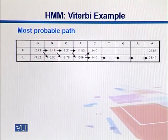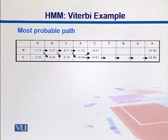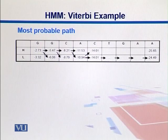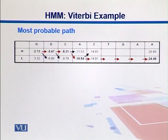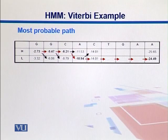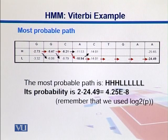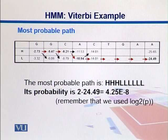We do the same for all nucleotides. On the rows we have both states, on the columns our sequence. We put all possibilities and pointers. The cumulative probability is -24.49 ending in state L for the last nucleotide, and -25.65 for state H. We have pointers showing where these numbers come from. We can trace back and conclude the most probable path started and stayed in H, H, H, then moved to L, L.